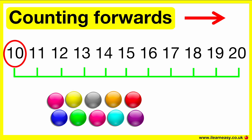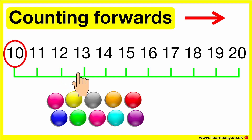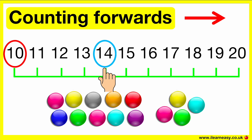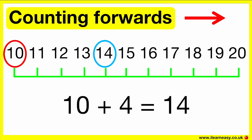Tim has ten marbles in his bag. He adds four more. How many marbles does Tim have? Start at ten because there are ten marbles. One, two, three, four, five, six, seven, eight, nine, ten. Eleven, twelve, thirteen, fourteen. So, ten plus four equals fourteen.